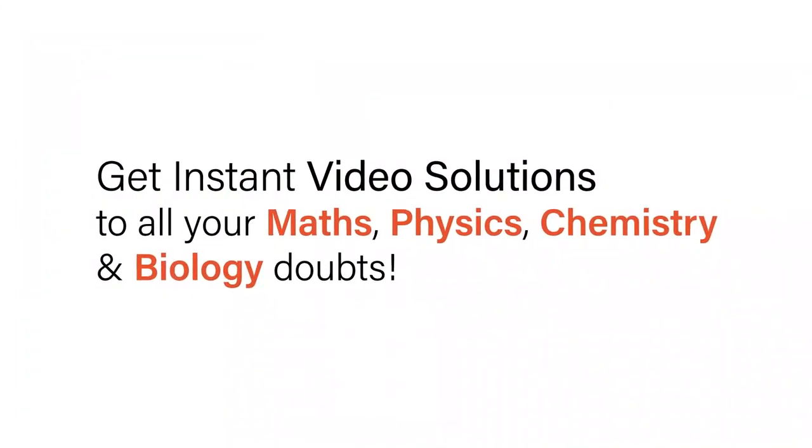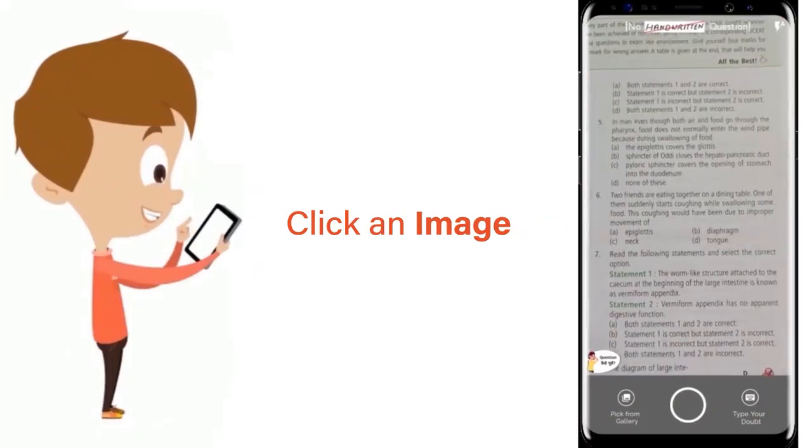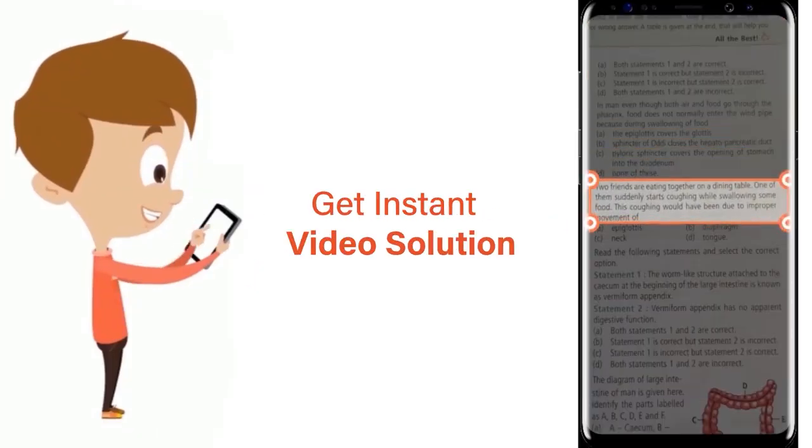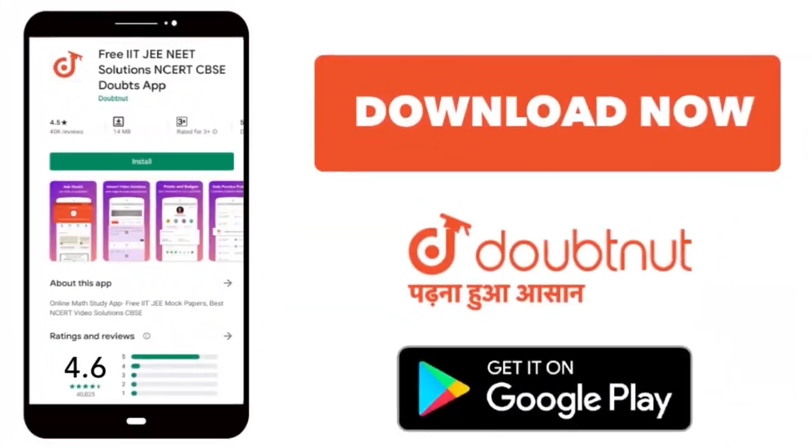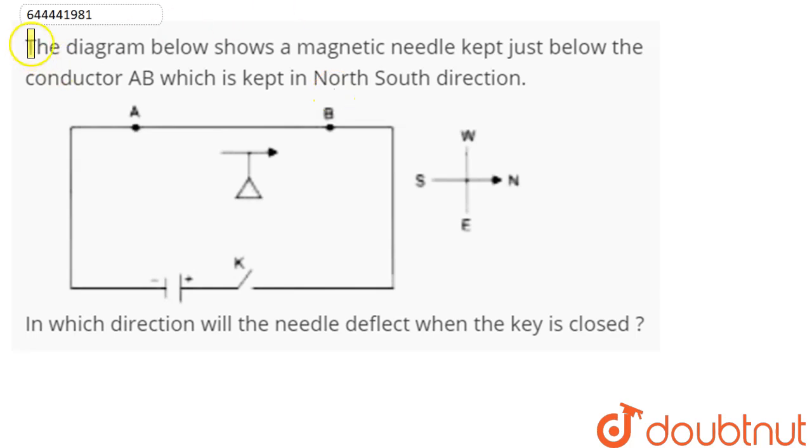With Doubtnet, get instant video solutions to all your maths, physics, chemistry and biology doubts. Just click the image of the question, crop the question and get instant video solution. Download Doubtnet app today. The question is: diagram below shows a magnetic needle kept just below conductor AB...